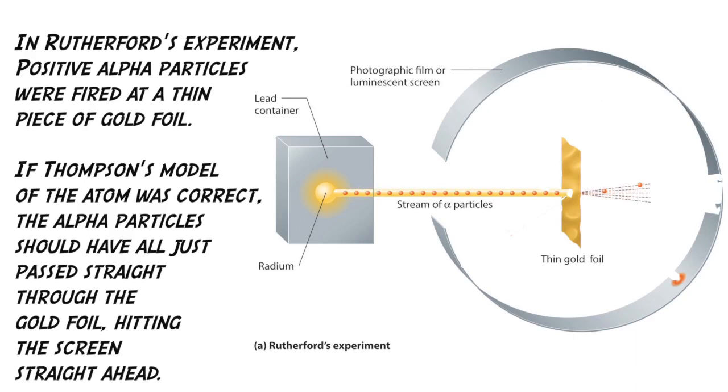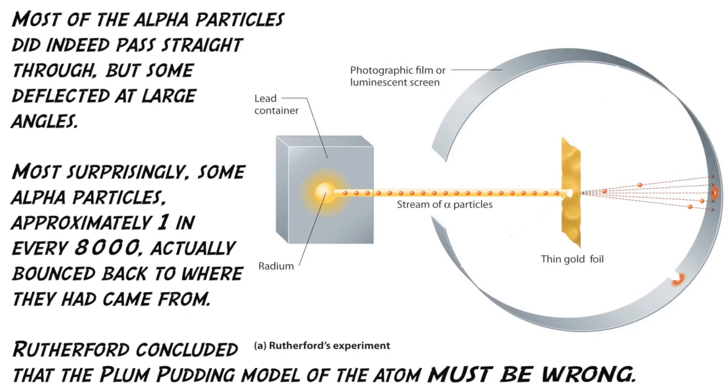If Thompson's model of the atom was correct, the alpha particles should have all just passed straight through the gold foil, hitting the screen straight ahead. Most of the alpha particles did indeed pass straight through, but some deflected at large angles.